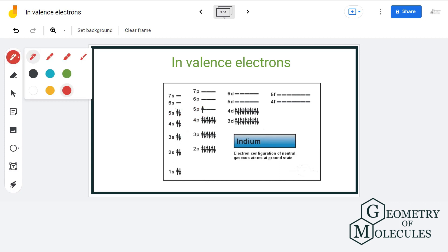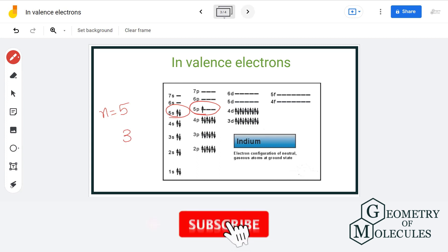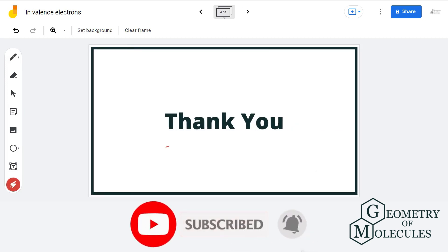Thus, the last electrons entered is in shell number five, that is 5s and 5p, so indium has three valence electrons. For more such videos, make sure to subscribe to our channel and thank you for watching.